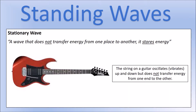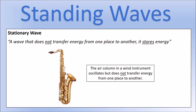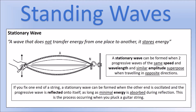A standing wave, or stationary wave, is a specific type of wave that doesn't transfer energy from one place to another — hence why it's called a stationary wave. It's really a store of energy. An example would be the strings on a guitar: you pluck the string and it vibrates, but the energy is not transferred from one end to another. Stationary waves also form in air columns, which is how most wind instruments work.